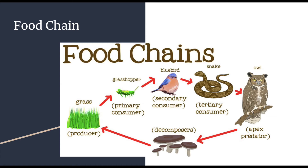Let's examine this food chain. This is just one energy pathway of a larger ecosystem. It starts with the grass, which uses sunlight to produce sugars through photosynthesis — this is our producer. This grass is then eaten by grasshoppers, our primary consumer, which are herbivores that only eat plants. Notice the arrow points towards the grasshopper and not towards the grass, because this represents the direction of energy flow.